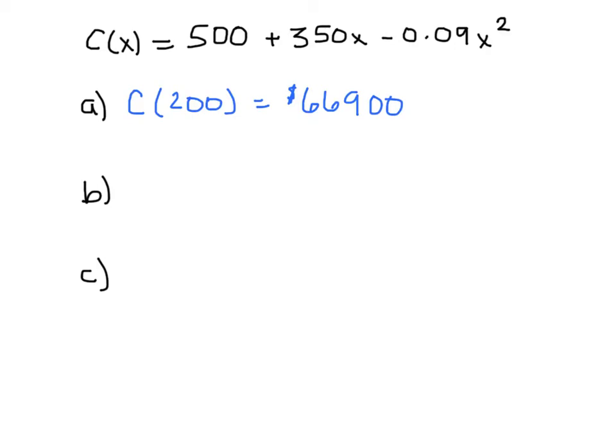Now, figuring out the cost for the 201st widget is slightly more complicated. Since this function tells us the cost of producing x widgets, we simply can't plug in 201 and figure out how much the 201st one costs. Because when you plug in 201, that tells you the cost to produce all 201 items. The way we figure out the 201st item is we take that cost and subtract off the cost for the first 200.